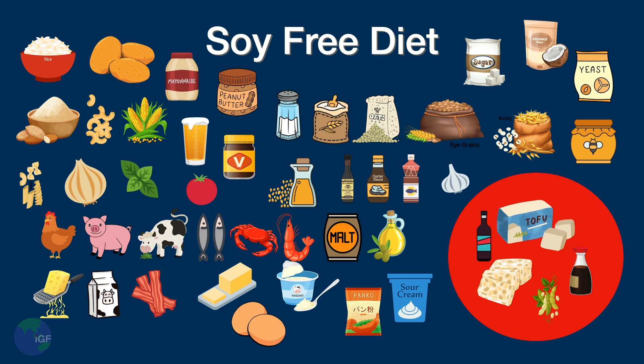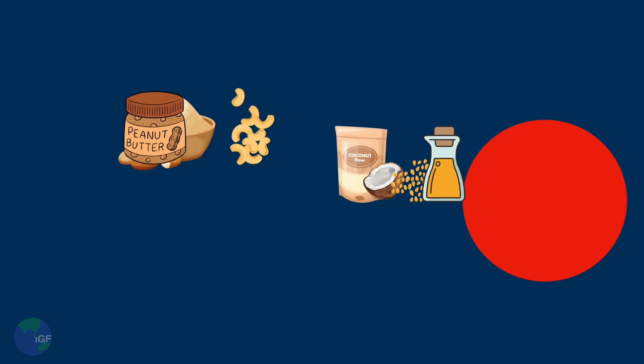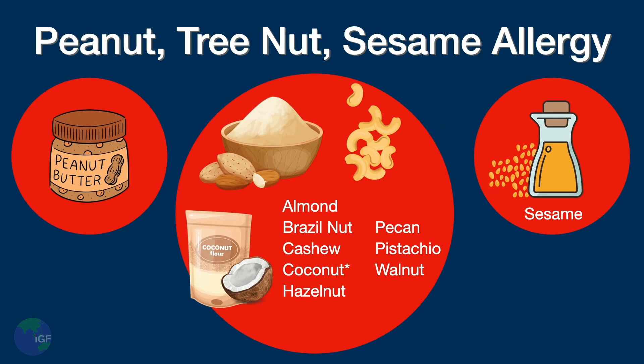Nut allergies can be very serious and life-threatening. Nut-free diets can include peanuts, tree nuts, or both. A peanut-free diet must eliminate peanuts, peanut butter, and anything that may have peanuts as an ingredient. Tree nut allergies are slightly different and include almonds, Brazil nuts, cashews, hazelnuts, pecans, pistachios, and walnuts.